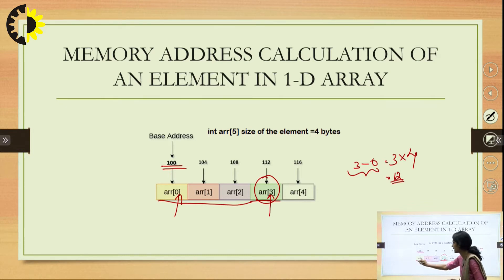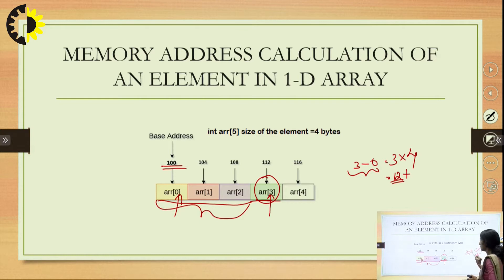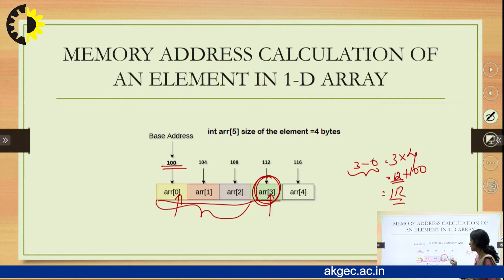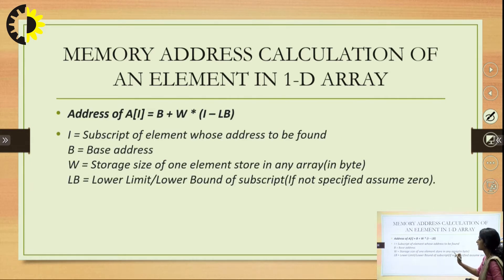12 bytes of memory are needed to store elements from index 0 to index 2. Now we add this value with the base address — the address of the first element — which gives 112. This is the address of the element with index value 3. So we can generalize what we have done into a formula: Address of a[i].